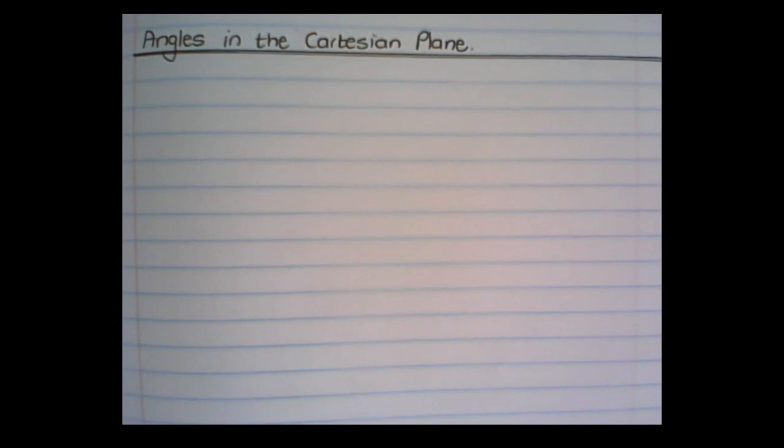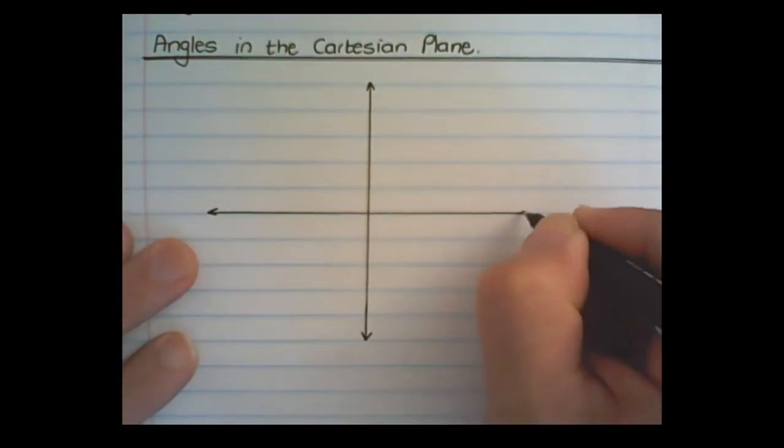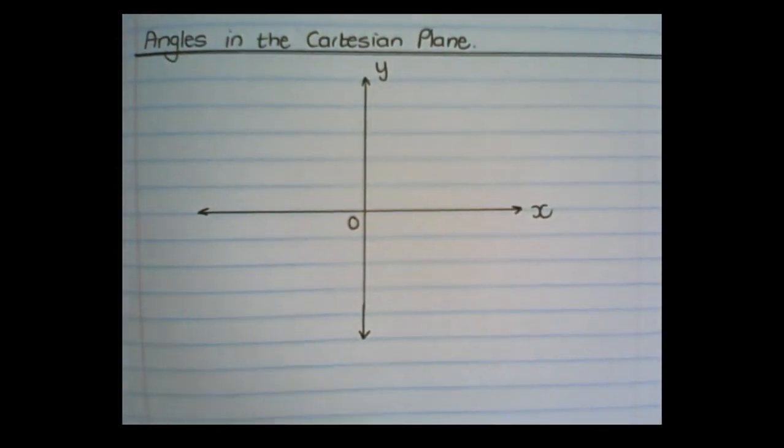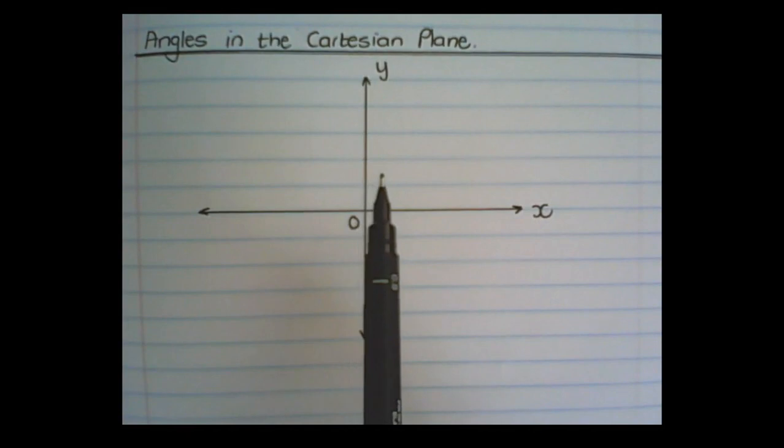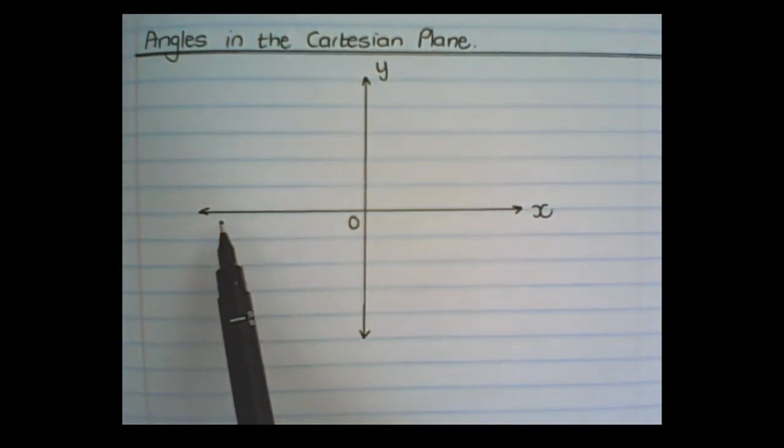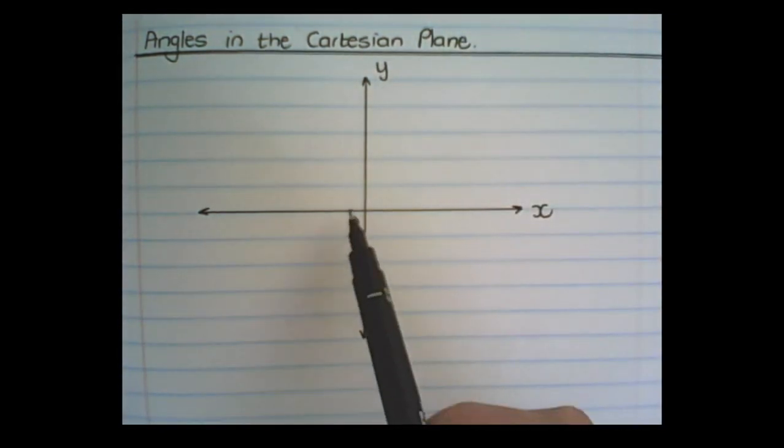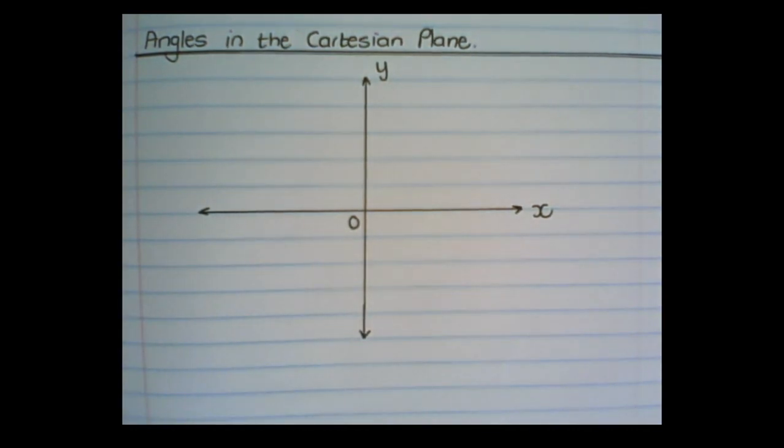In this video we are going to build on our trigonometric definitions. In the previous grades you would have learned about a Cartesian plane, the x-axis and the y-axis, and also the origin, that's the position where the x and y values cross.